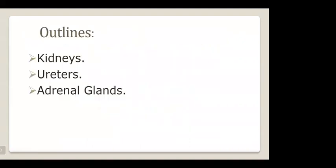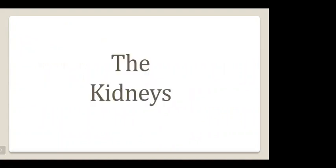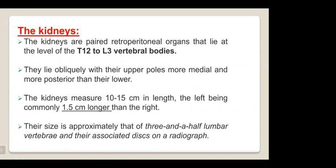First we will talk about the kidneys, ureter, and then adrenal glands. The kidneys are paired retroperitoneal organs that lie at the level of T12 to L3 vertebral bodies. They lie obliquely with their upper pole more medial and more posterior than the lower pole. The kidneys measure about 10 to 15 cm in length, the left being commonly 1.5 cm longer than the right.